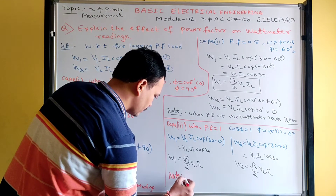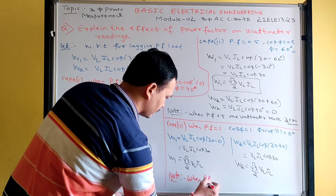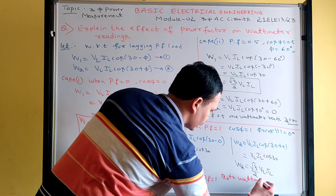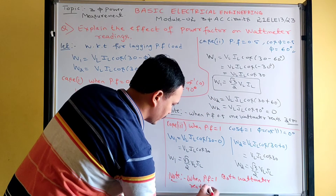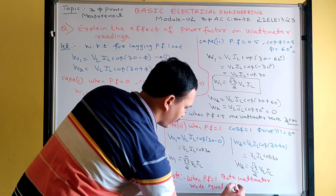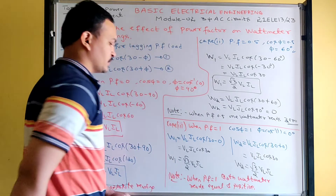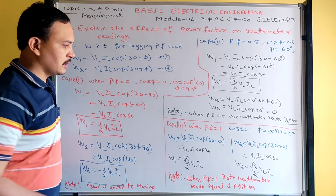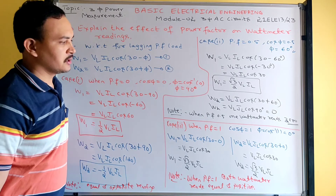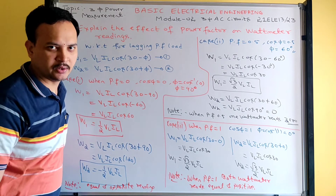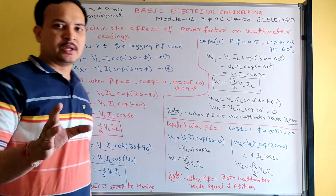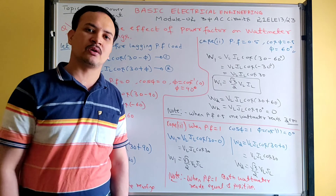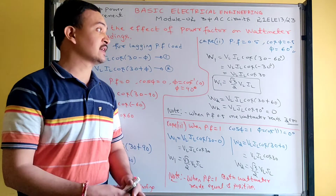Note point: when power factor is 1, both wattmeters read equal and positive values. This gives you useful subject knowledge — by knowing the wattmeter values you can easily estimate the power factor. For example: if W1 = 5 kW and W2 = 0 W, one wattmeter is zero, so the power factor is 0.5. If W1 = 1 kW and W2 = 1 kW (equal readings), power factor is 1.